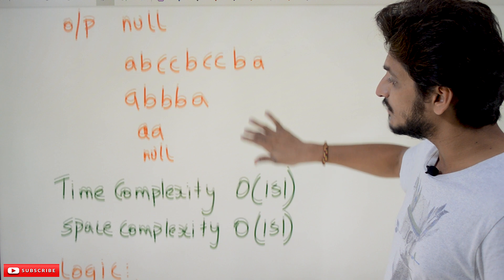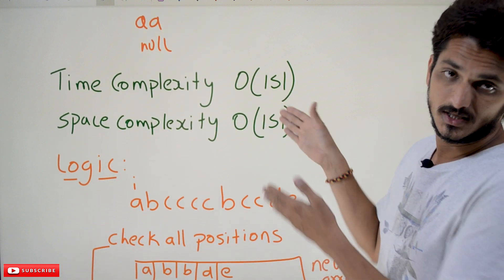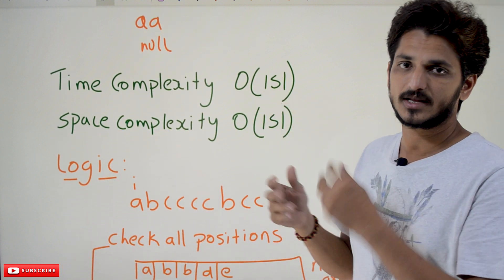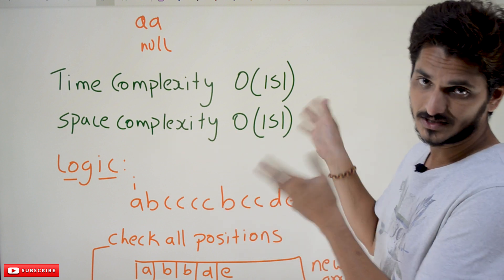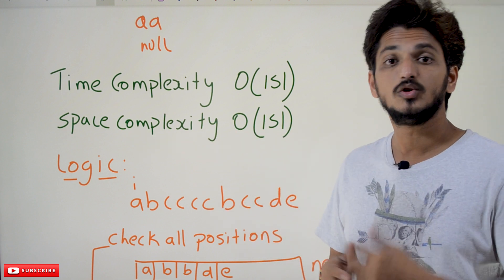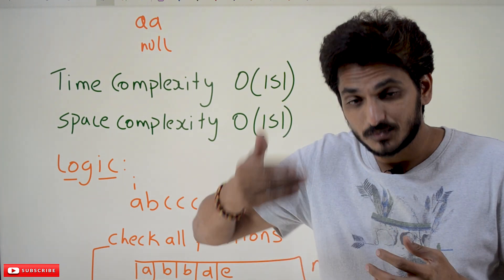You have to maintain a time complexity of big O of size of s means number of characters in that string and a space complexity of big O of size of s. So you can use one extra space to do this.